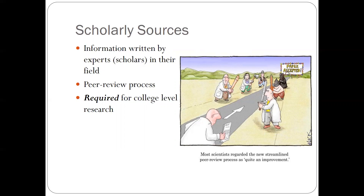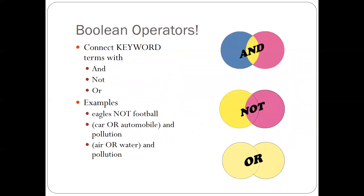One final thing before we go to the databases: you can narrow down your search results by combining your keyword terms using the Boolean operator AND. So if you want, you would type in say 'Stephen Crane AND soldier,' or 'The Things They Carried AND Vietnam,' because you want articles that are on both of those topics — that overlapping yellow area in the middle. You can keep adding more keyword terms and that overlapping area would keep getting smaller and smaller.